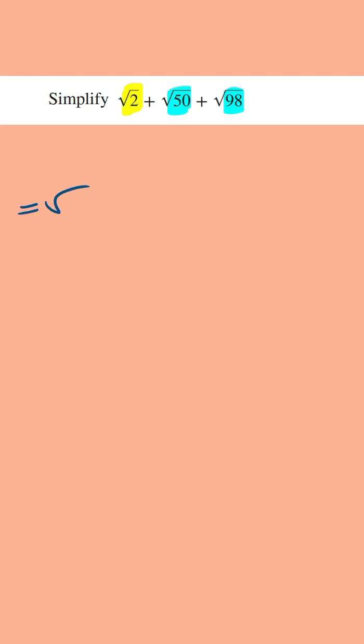And so simplifying this, you can write this as the square root of 2 plus the square root of 25 times 2 and then plus the square root of 49 times 2.